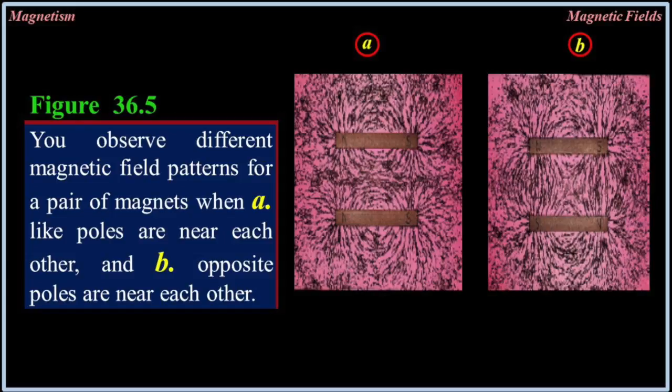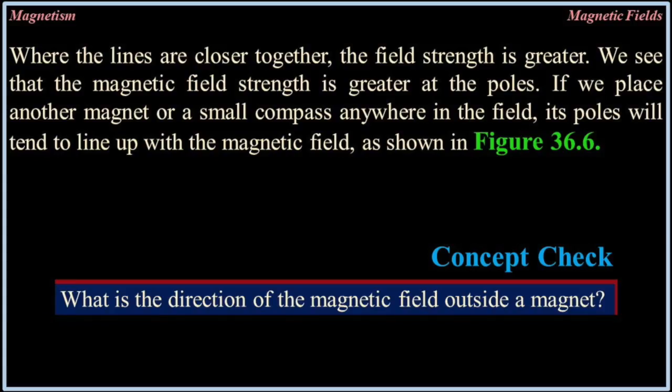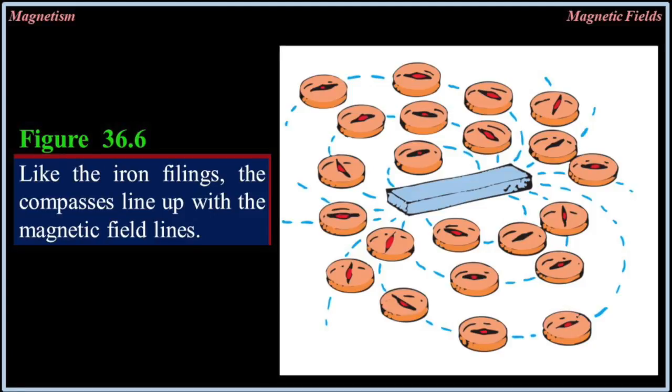You observe different magnetic field patterns for a pair of magnets when like poles are near each other and when opposite poles are near each other. Where the lines are closer together the field strength is greater. We see that the magnetic field strength is greatest at the poles. If we place another magnet or small compass anywhere in the field, its poles will tend to line up with the magnetic field.